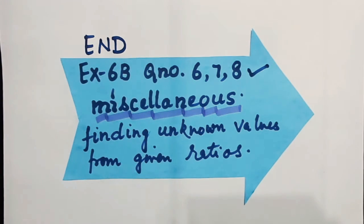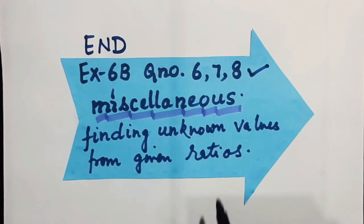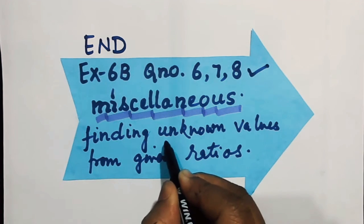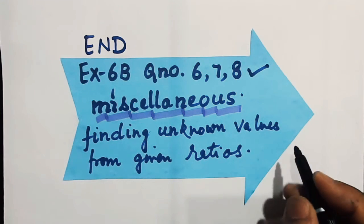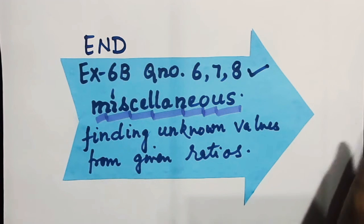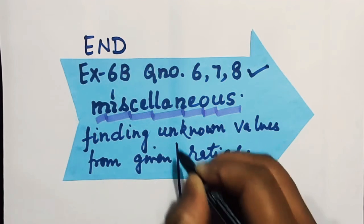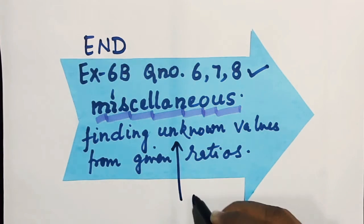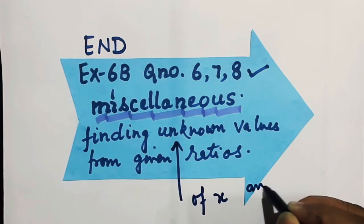Miscellaneous means variety, different varieties. I found that here we need to find the unknown values from the given ratio. The ratios are given, and in the ratio we have to find the unknown values of x and y.